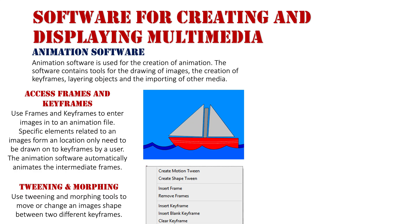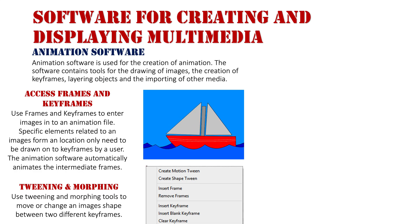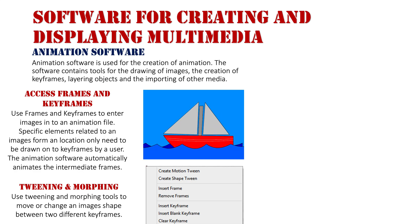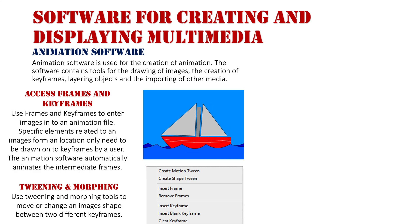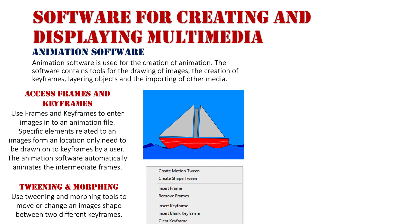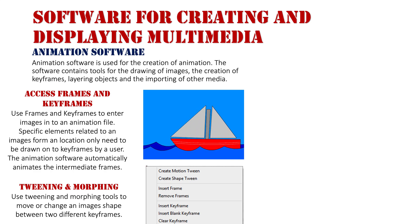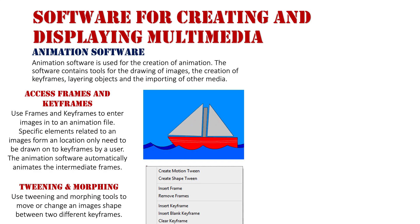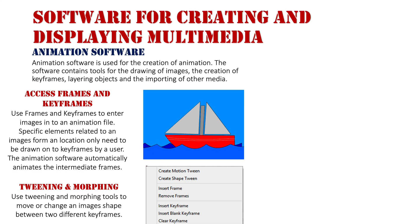These are the tools that create those intermediate frames. A traditional tween allows an object to move from one spot to another. At frame zero my boat is at its most left; at frame 30 it's at its most right; at frame 60 it's at its highest point.